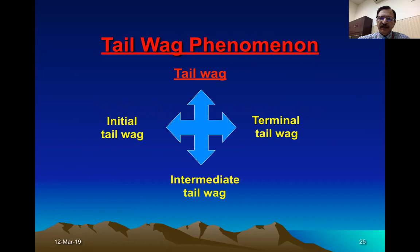The terminal tail wag occurs after traveling a longer distance when the velocity is reduced, causing the bullet to again become unstable. A classical example is the spinning top: initially it wobbles, in the middle it becomes steady, and at the end when velocity is reduced it becomes unstable again. So the bullet shows initial, intermediate, and terminal tail wag.